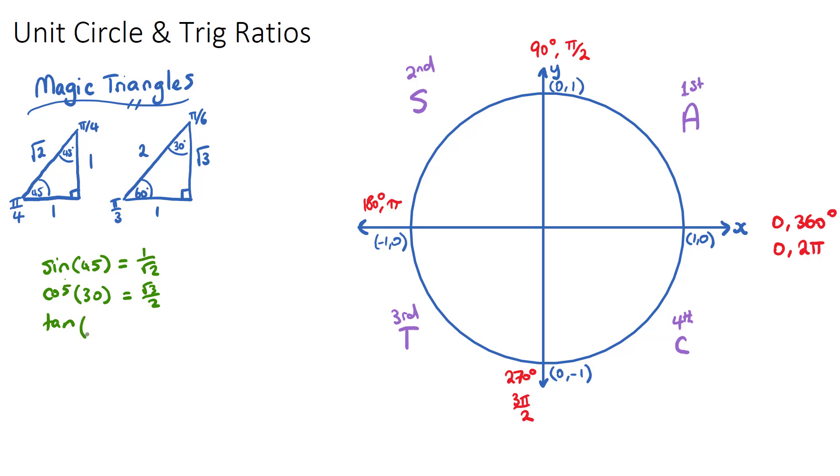And if we want to, for example, do tan of, let's say, 60 degrees or π/3 radians, we can go to the triangle that has π/3, which is this down here, and take tan. And tan is opposite over adjacent. It'd be root 3 on 1, which we can just say is root 3. So these two triangles help us to find all of the key trig ratios that we need in non-calculator exams. We can find sine, cos, and tan of 30, 45, and 60 degrees.